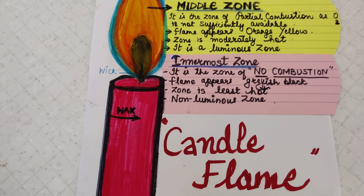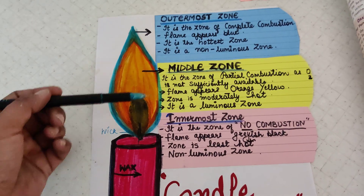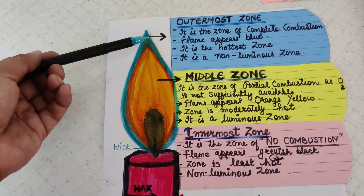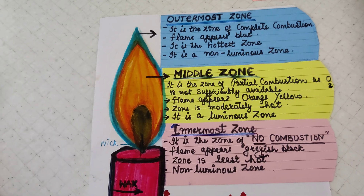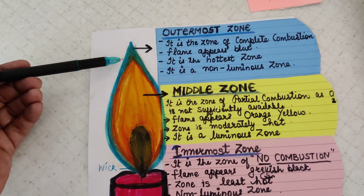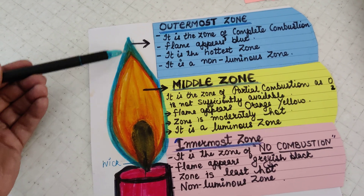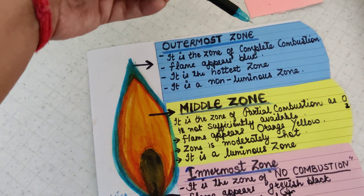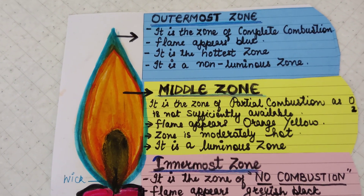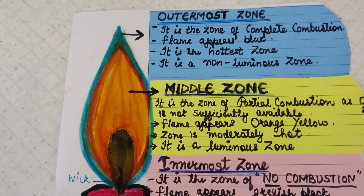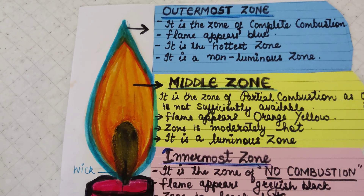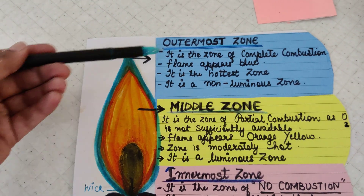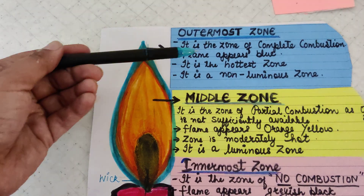When we observe the candle flame very closely, we can see three different zones. Going from outside to inside, the outermost zone is where the oxygen supply is good, and this zone shows a blue color. This is the zone of complete combustion because enough oxygen supply is present. The flame color is blue, making it the hottest zone, and it is a non-luminous zone.